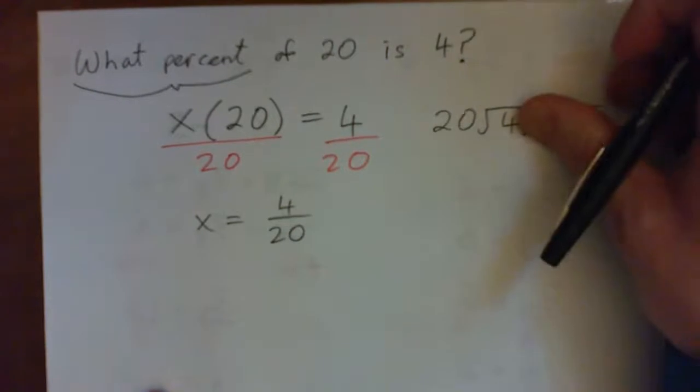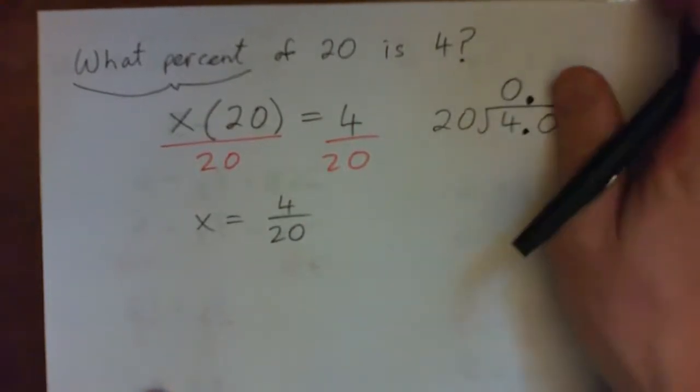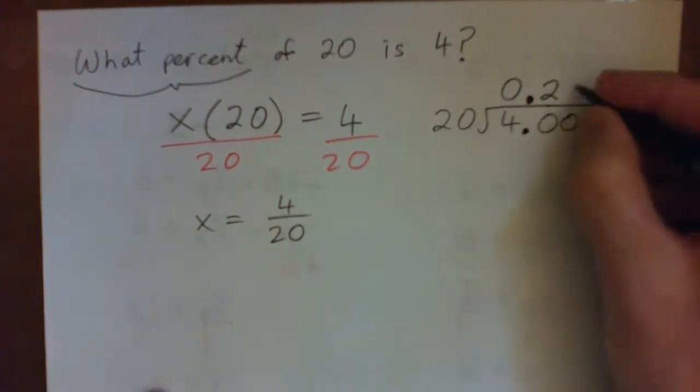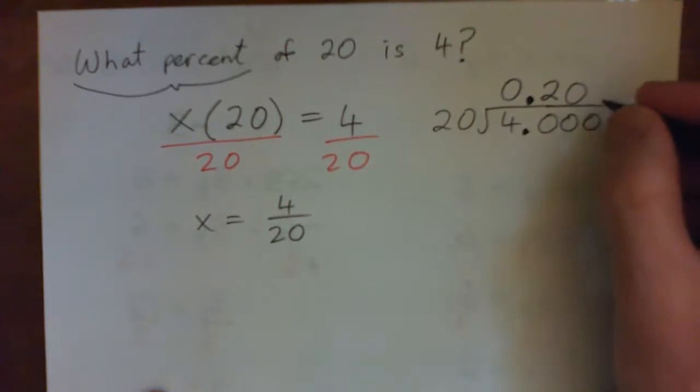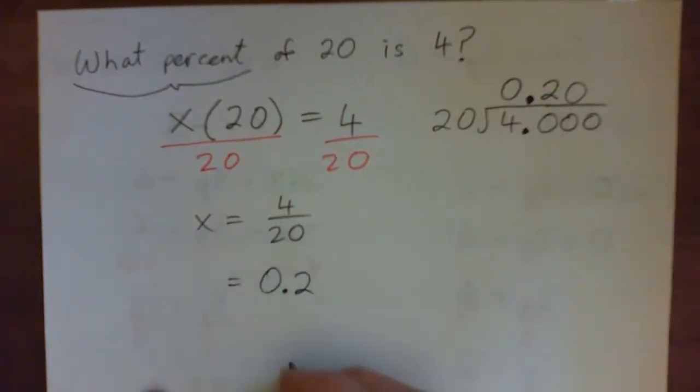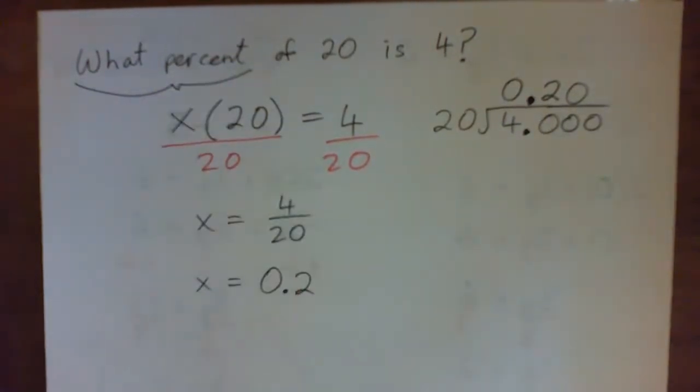20 into 4 goes 0 times. Put up the decimal point here. 20 into 40, 2 times. 20 into 0, 0 times, and so on. So this becomes 0.2. So what percent, our X, became 0.2?